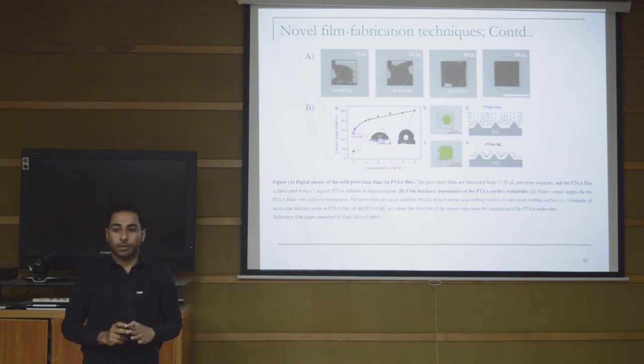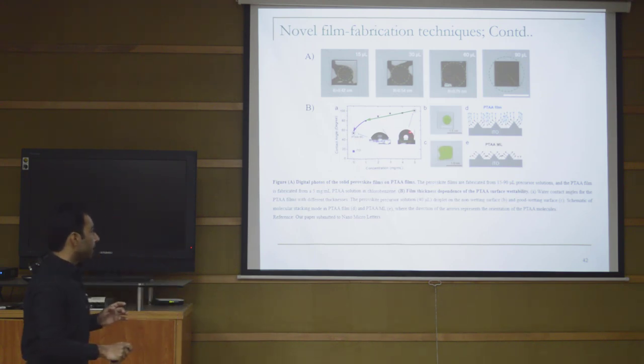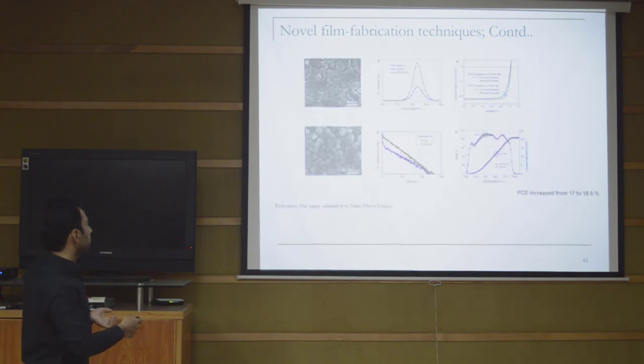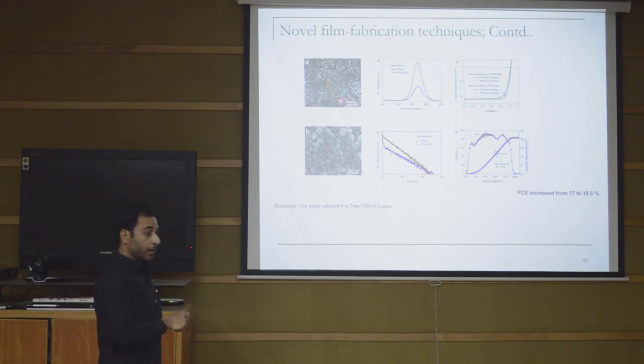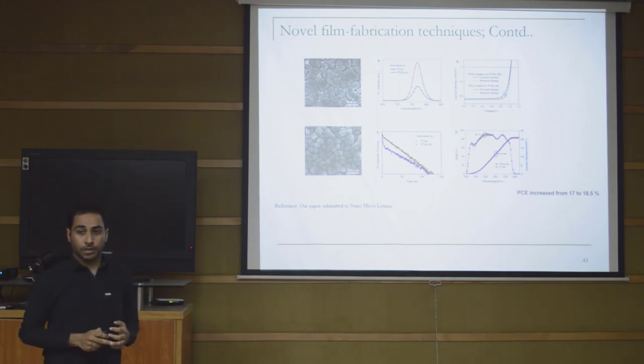We got full coverage with only 12 microliters instead of 19 microliters, so a lot of precursor solution was saved. The contact angle was much smaller, meaning the solution was very easy to spread. If you see the SEM images compared, the one with thicker hole transporting layer has lots of grain boundaries and pinholes which appear as trap sites when utilized in a solar cell device.